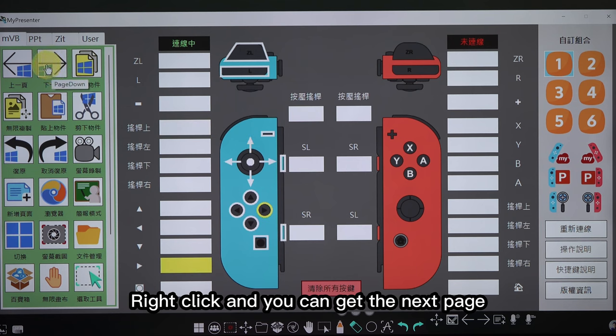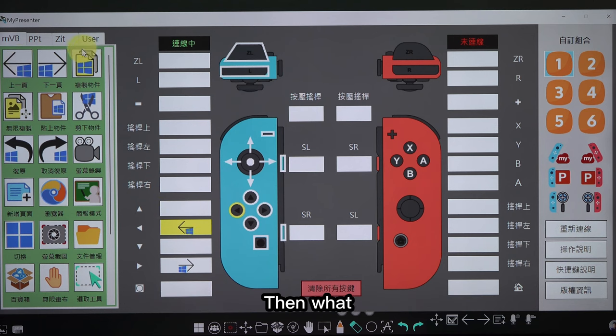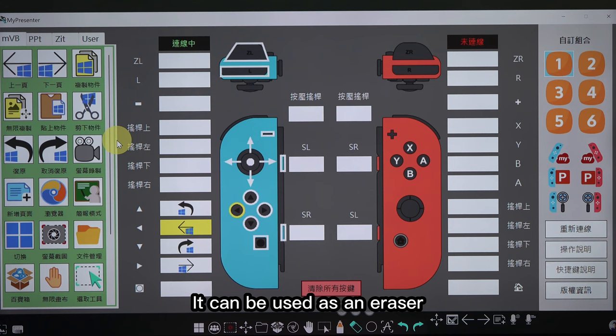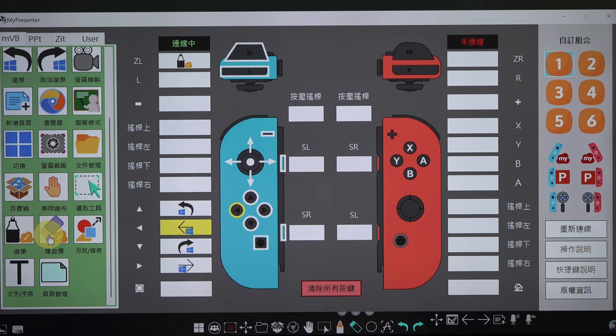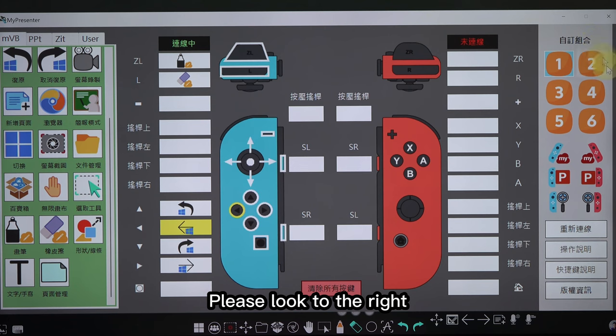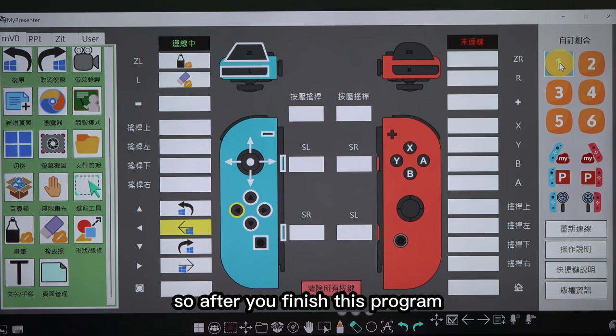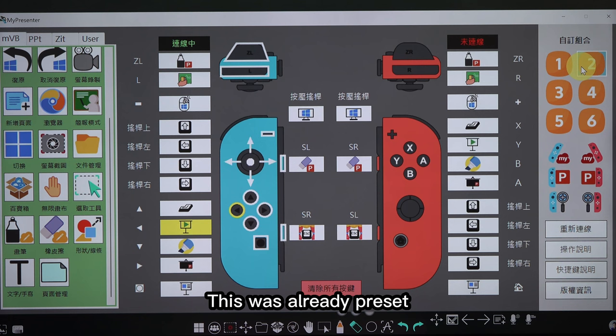For example, right click and you can get the next page. Left click you can get the previous page. Then, this undo button is also very useful. It can be used as an eraser. You can try it out first. Of course the pen tool is also very important. Eraser tool here. You can try playing like this first. When you press this key, its function is this. Please look to the right, there are six custom combinations on the right. So after you finish this program, you don't have to save it, it was automatically saved. We press the button of 2, this was already preset.